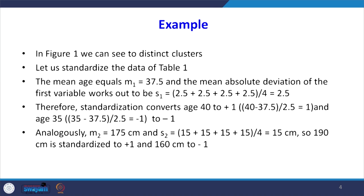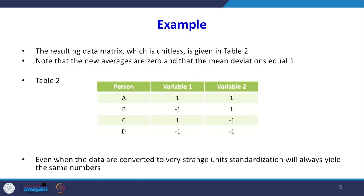Standardization converts 40 to +1. We know the formula is (x - μ) / s. So x = 40, mean = 37.5, divided by mean absolute deviation 2.5, equals 1. Similarly, age 35 is standardized to -1: (35 - 37.5) / 2.5 = -2.5 / 2.5 = -1. For variable m2, the mean is 175 and mean absolute deviation is 15. So 190 cm is standardized to +1 and 160 cm is standardized to -1. The resulting data matrix, which is unitless, is given in table 2.